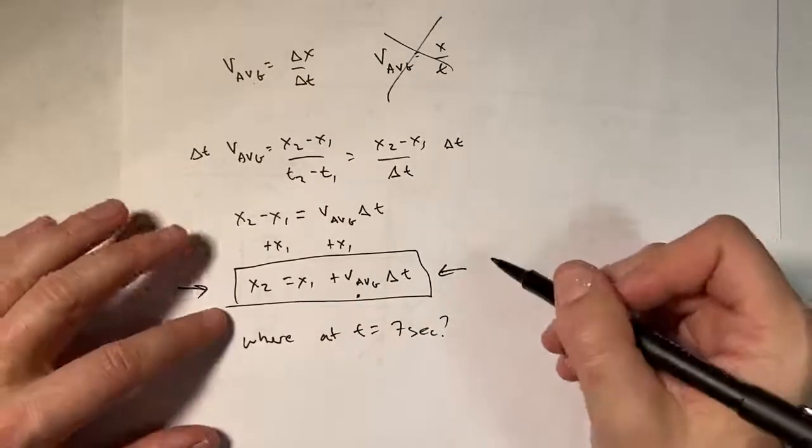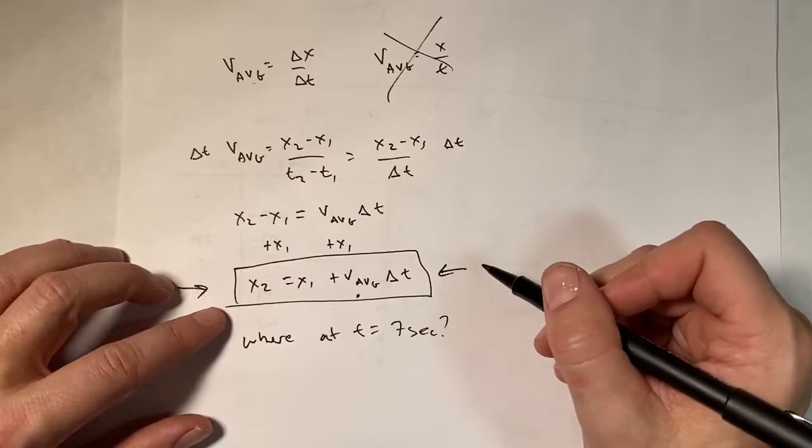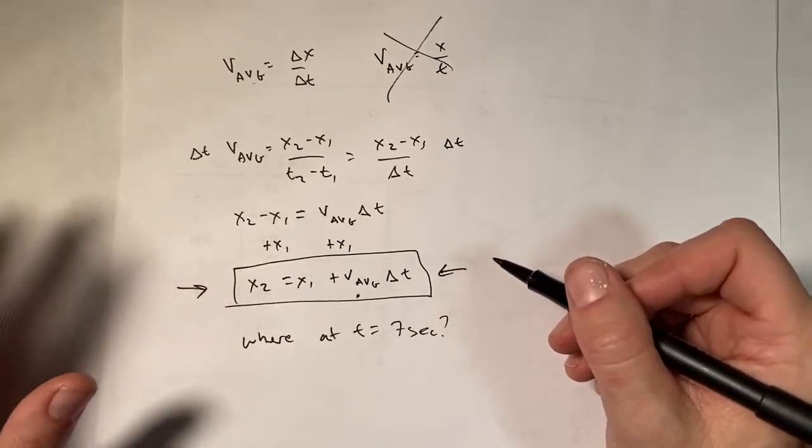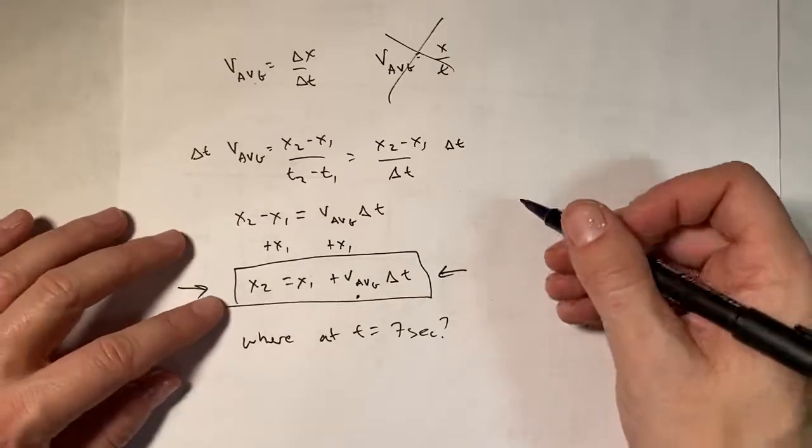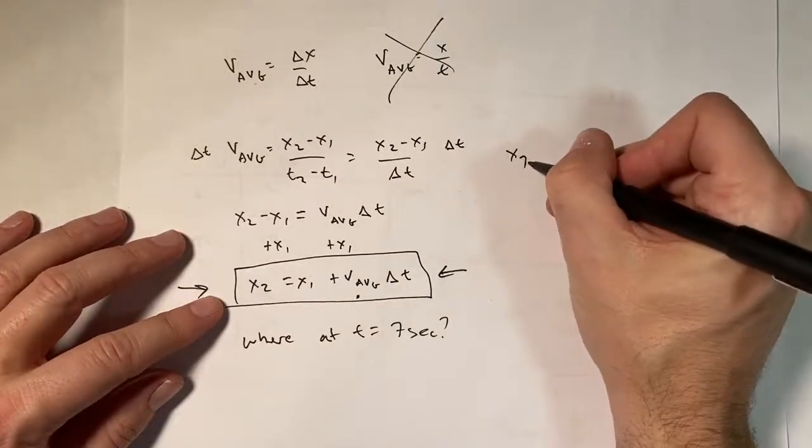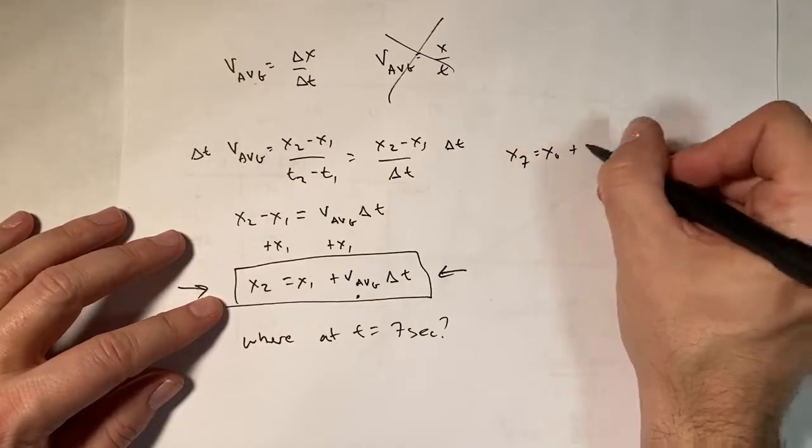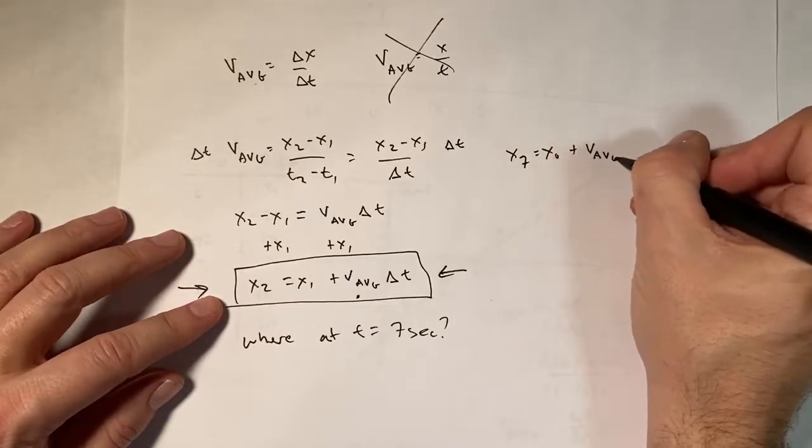But where will it be at t equals 7 seconds? Okay, well, let's say I need to pick a change in time and a change in position, and I can do anything, right? Let's just say t equals 0.